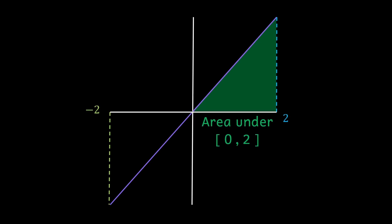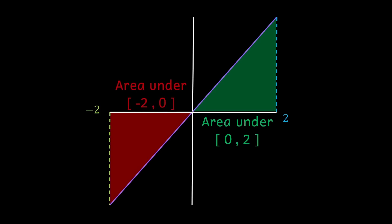Likewise, if we go the same distance in the negative direction, we get the same triangle, but because it's under the x-axis, the area is negative.